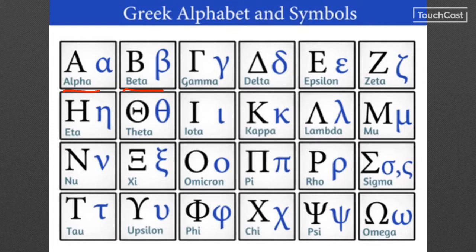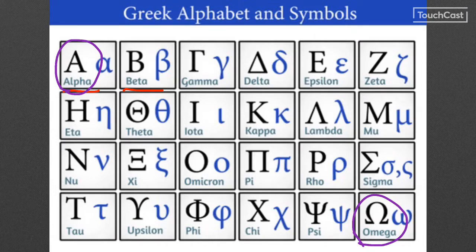I also want you to notice the first and the last letters in the Greek alphabet: alpha and omega. Where have we heard these before? We've heard them in the book of Revelation where the Lord says that he is the beginning and the end, the first and the last. He's saying that not just to describe his power, but because alpha and omega are the beginning and end of the alphabet — the first and last.